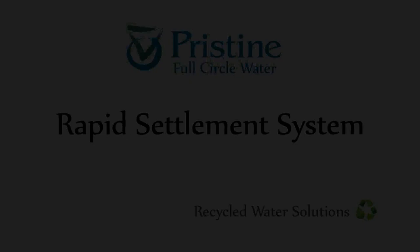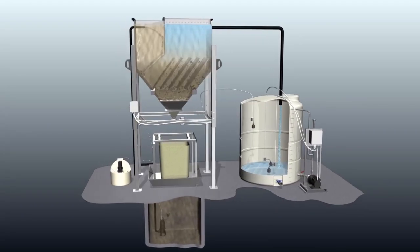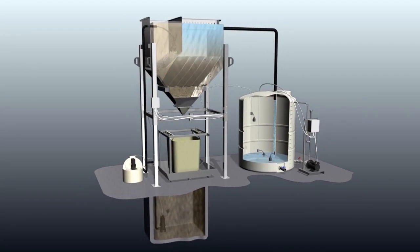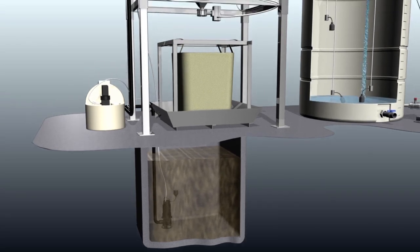This animated video will demonstrate how the Full Circle Water rapid settlement system works. As the slurry rises, the pump sends dirty water to the rapid settlement system.